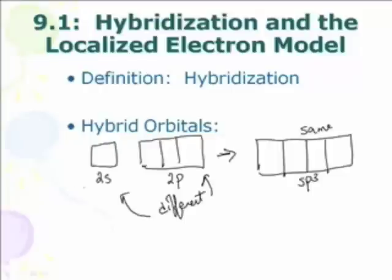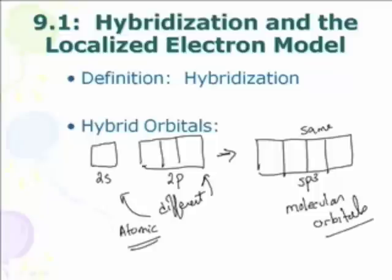You see, these orbitals here are actually called atomic orbitals because they relate to atoms. And these are called molecular orbitals because they are now related to molecules. Molecules, molecular, atomics. That's the name. Yeah. So hopefully that kind of makes some sense to you there. Okay?